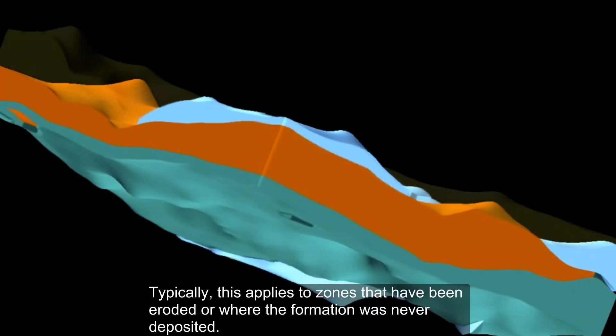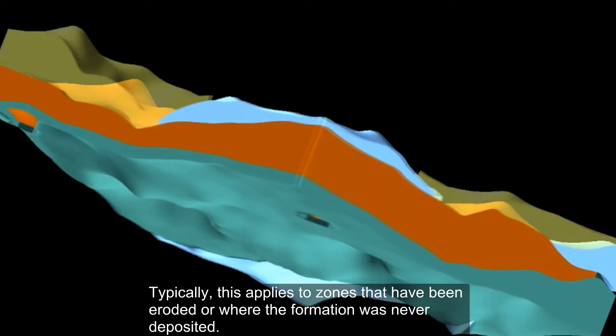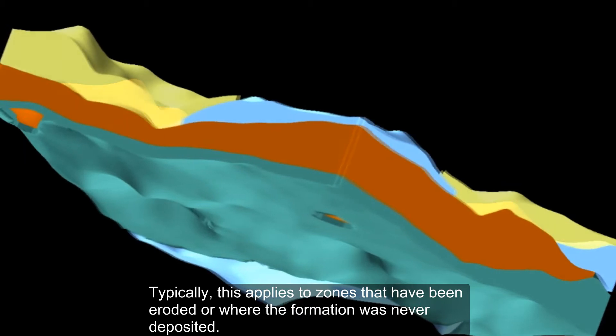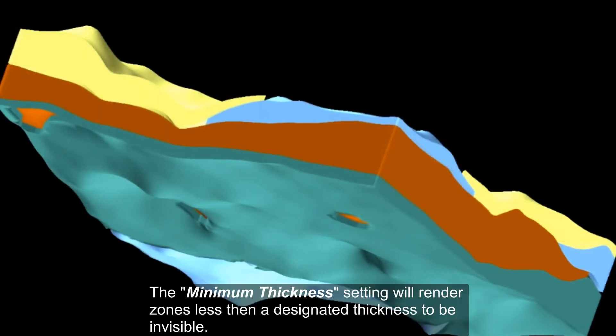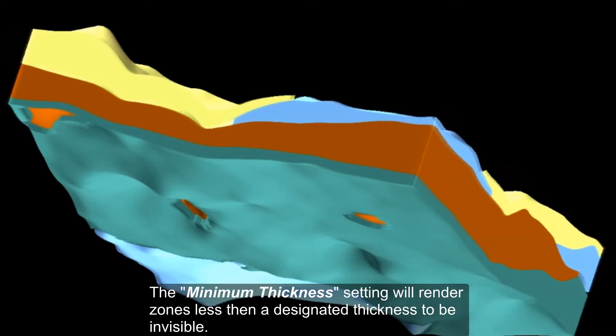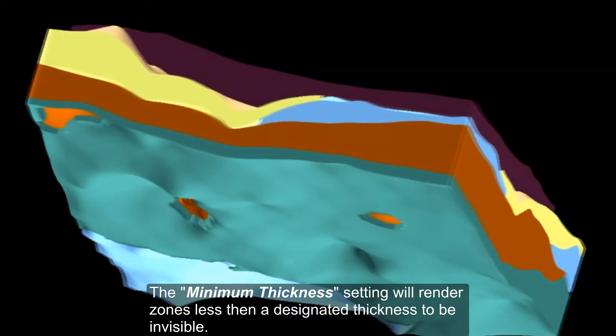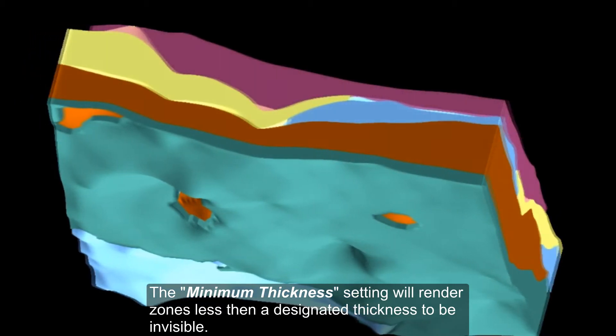Typically, this applies to zones that have been eroded or where the formation was never deposited. The minimum thickness setting will render zones less than a designated thickness to be invisible.